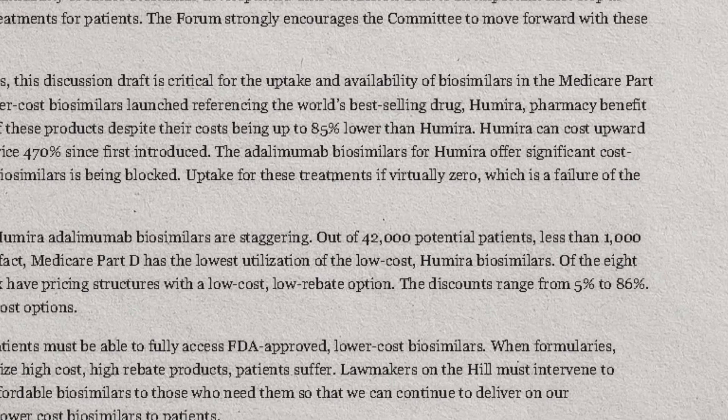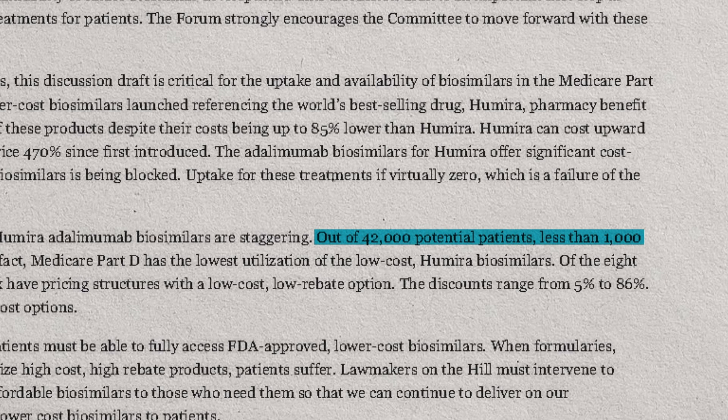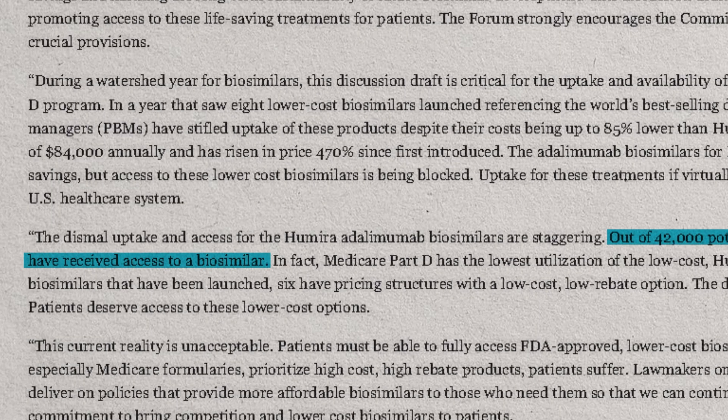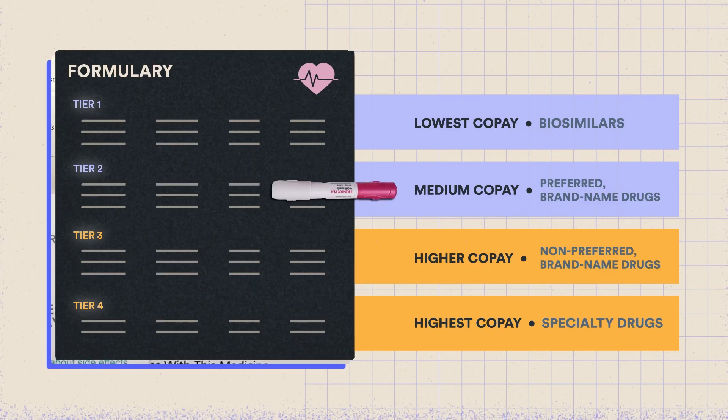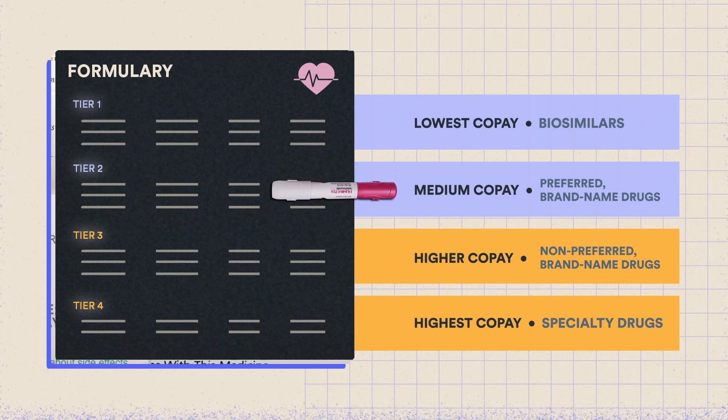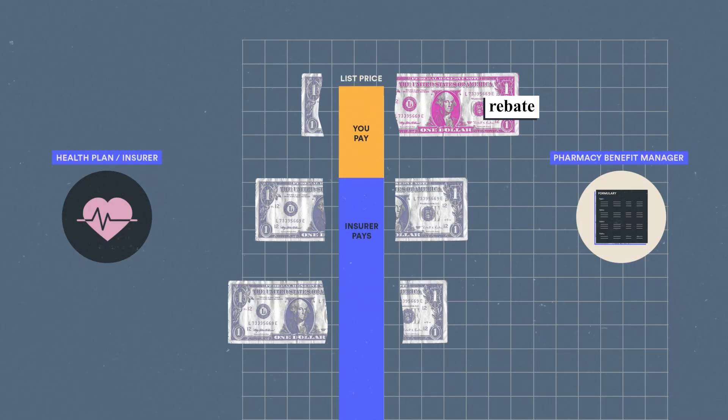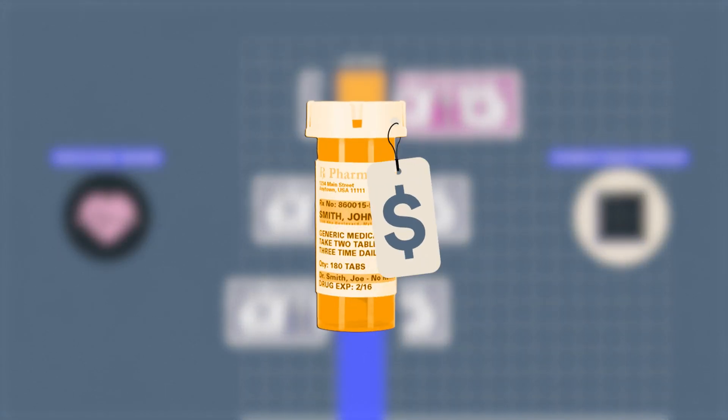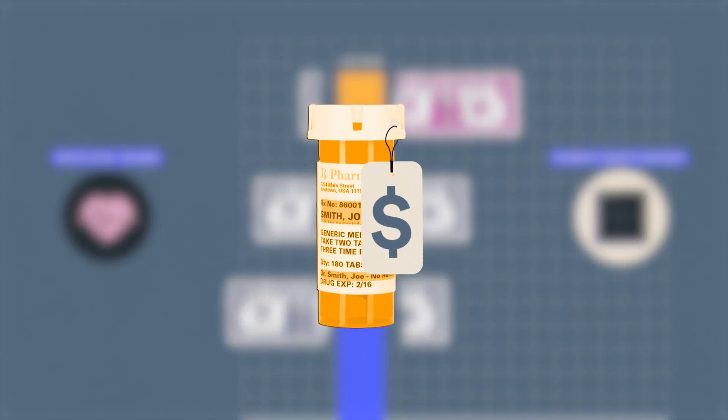In 2023, only 1,000 patients out of 42,000 people covered by Medicare and prescribed Humira received a biosimilar. One thought on why this may be is that maintaining Humira high on the formulary is advantageous for PBMs, as Humira's high list price means high rebates for PBMs.